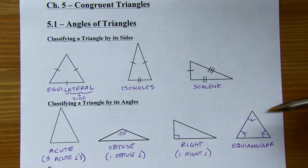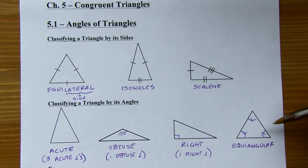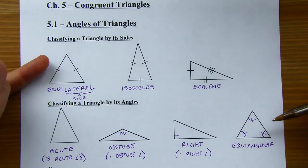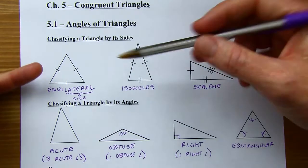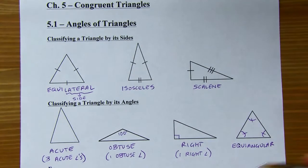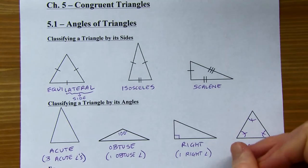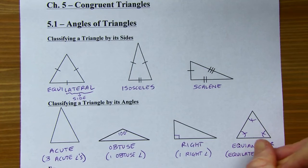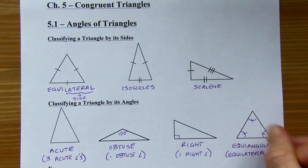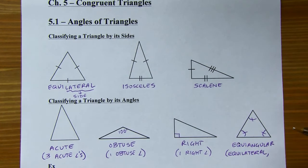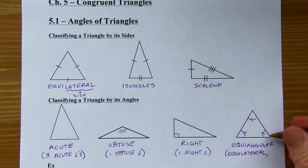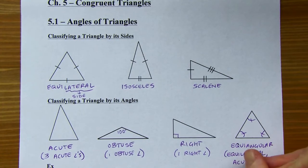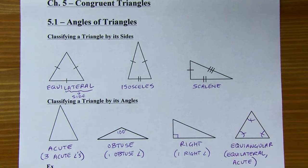It just so happens, if you've got an equiangular triangle, it's going to be equilateral. So all equiangular triangles are equilateral, and all equilaterals are equiangular — there's a theorem about that later. All of those angles are going to be 60 degrees if they're all congruent, and since 60 degrees is acute, this also qualifies as an acute triangle.